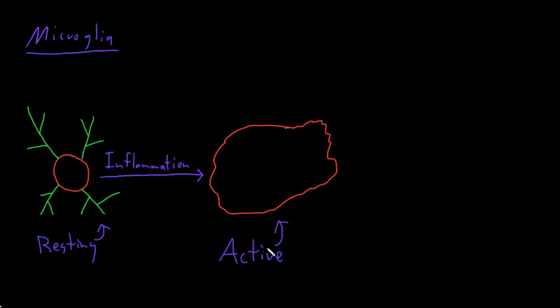Now active microglia look and act like macrophages anywhere else in the body, which is a type of cell that moves around through tissues looking for dead or damaged cells or foreign cells. So active microglia will move or migrate over to areas of inflammation. And they're looking for things like bacteria or other foreign cells that have invaded and are causing an infection or dead or damaged cells of the central nervous system.